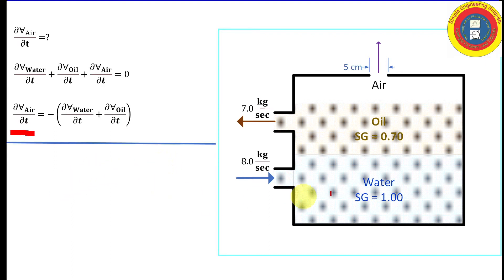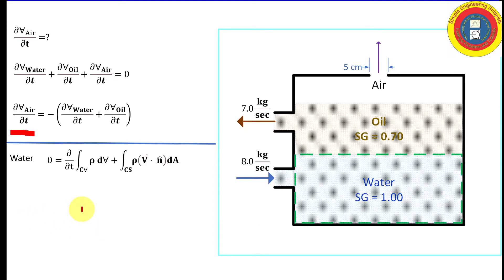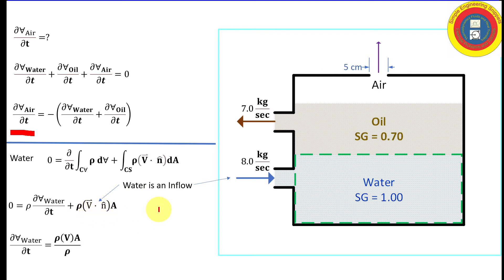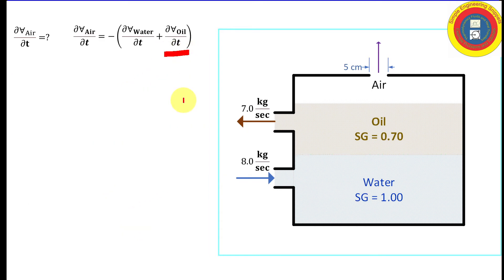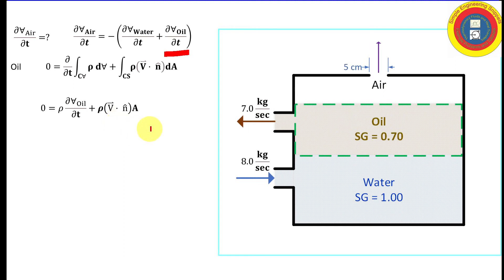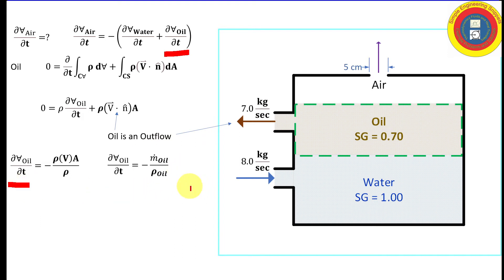Applying Reynolds Transport Theorem separately to the water: since water is an inflow, the dot product returns a negative sign, giving dV_water/dt = mass flow rate of water in divided by density of water — a positive value, as expected since water volume is increasing. Then applying RTT to the oil: since oil is an outflow, the dot product returns a positive sign, and we solve for dV_oil/dt, obtaining the corresponding expression.